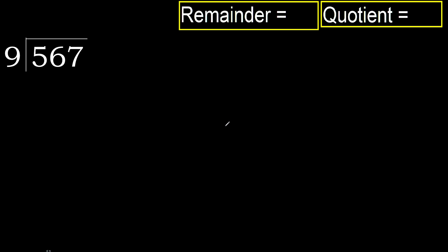567 divided by 9. 5 is less than 9, therefore next. 56 is not less, therefore we work with 56.